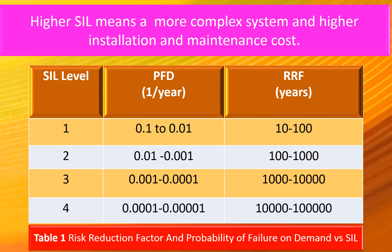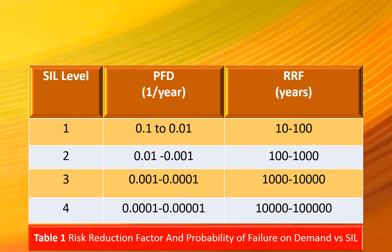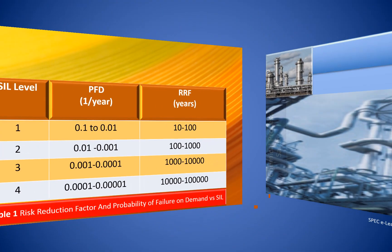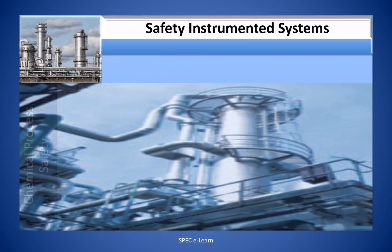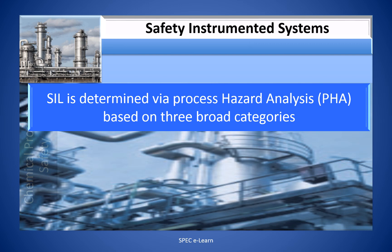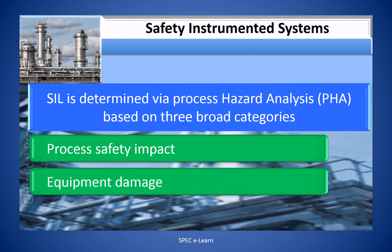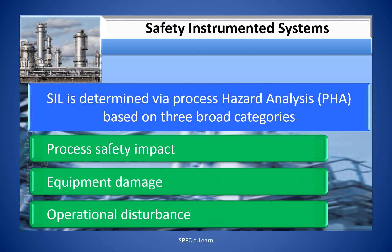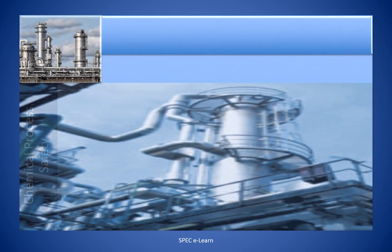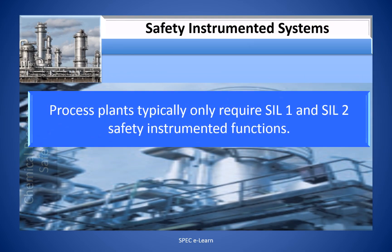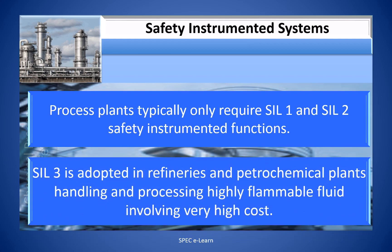Higher SIL means a more complex system and a higher installation and maintenance cost. SIL is determined via process hazard analysis based on three broad categories: process safety impact, equipment damage, and operational disturbance. Process plants typically only require SIL 1 and SIL 2 safety instrumented functions. SIL 3 is adopted in refineries and petrochemical plants handling and processing highly flammable liquids, involving very high cost.